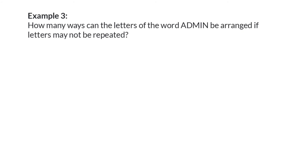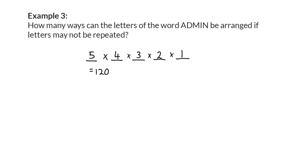Example 3: how many ways can the letters of the word 'admin' be arranged if letters may not be repeated? Because the letters may not be repeated, this is a rearrangement of the five letters forming the word admin. We have five tasks or five spots to fill. For the first task, we have all five letters to choose from. Once we've used the first letter, there are only four options left for task 2, then three for task 3, two for task 4, and one remaining for task 5. Therefore, there are 120 different ways in which the letters of the word admin can be arranged.